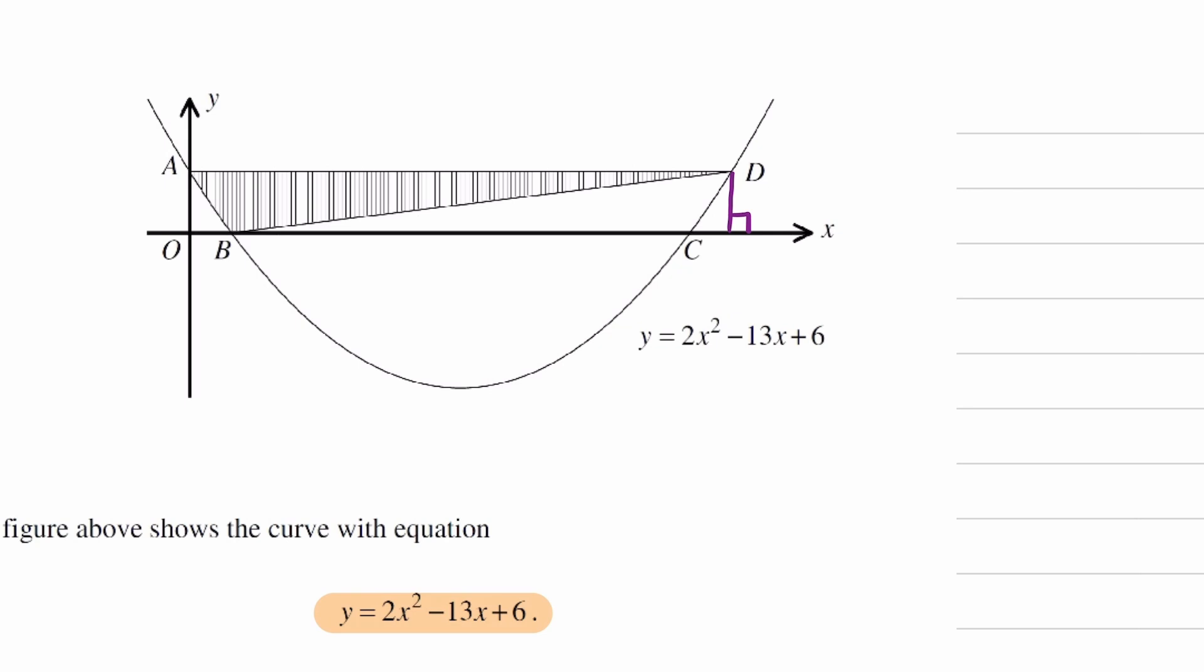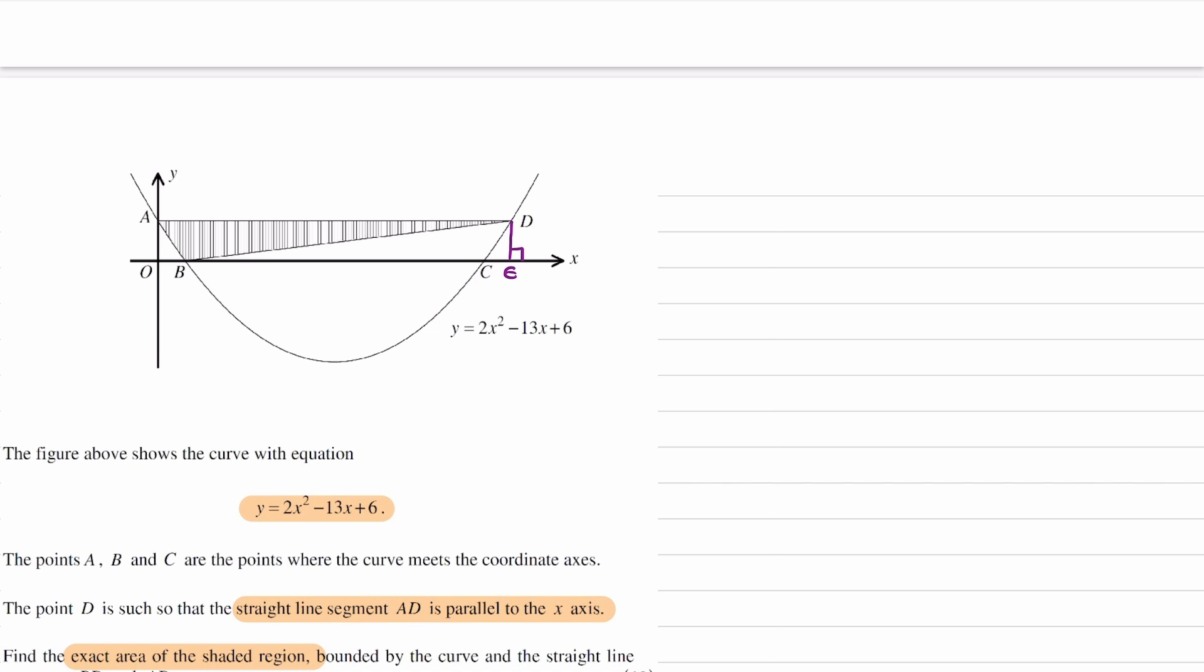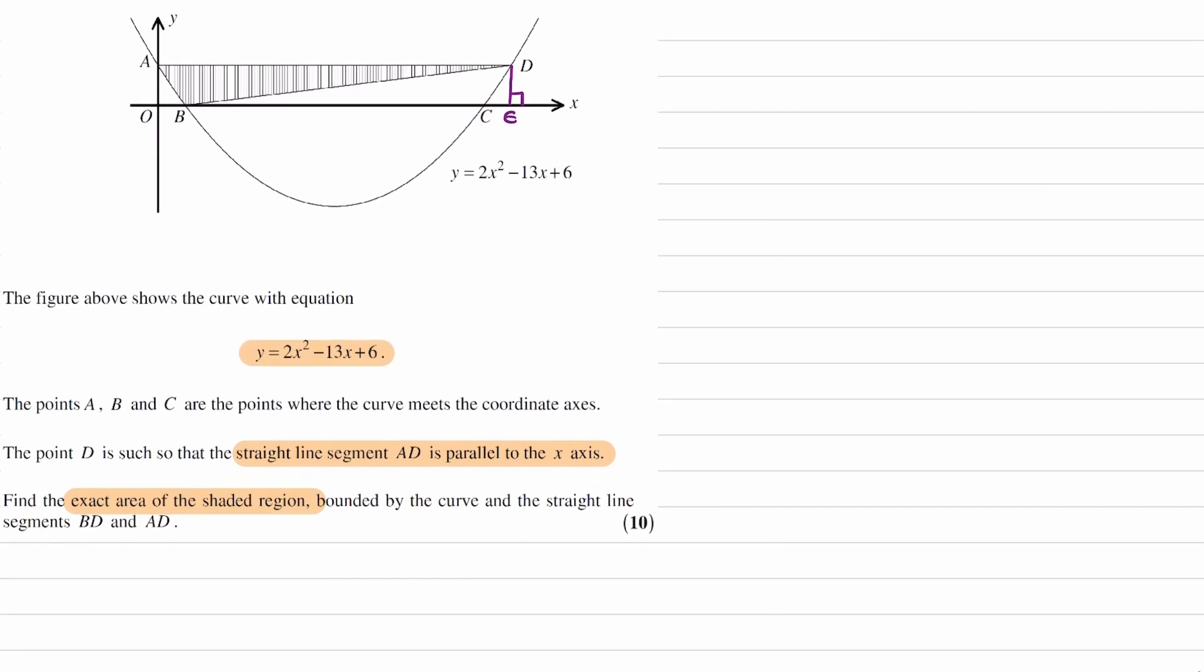A way in which we can do this is to consider the rectangle OADE. I'm going to call this point here E. So OADE, consider that rectangle. Find out the area of the rectangle, take away the area of this triangle here, and then take away the area of this shape here. So to do that, we're going to have to work out the coordinates of A and D. So let's start with that.